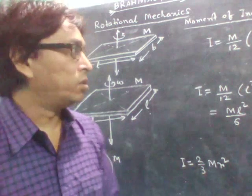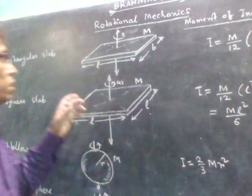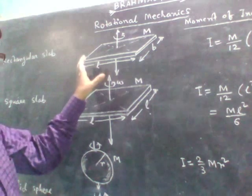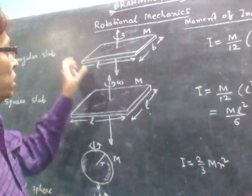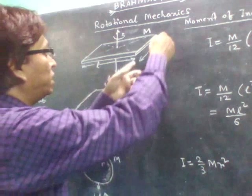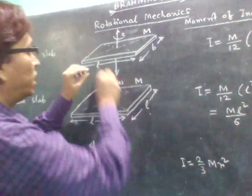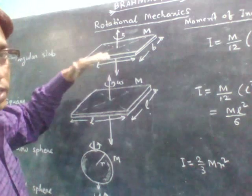Moment of inertia for other bodies like this is a rectangular slab. So rectangular slab having length L and its breadth is B. And it is a slab having no thickness, so just like a disc.